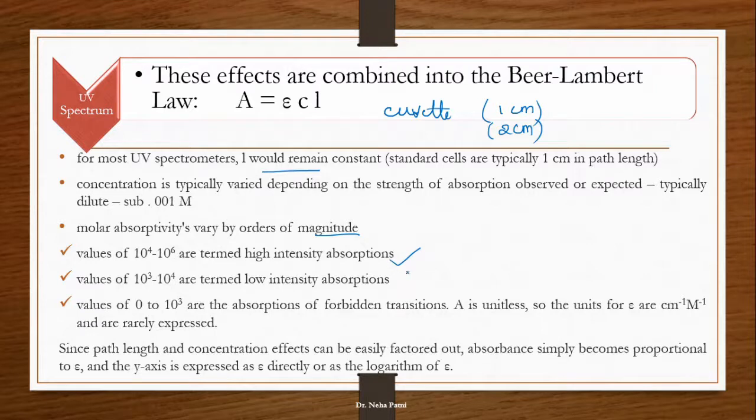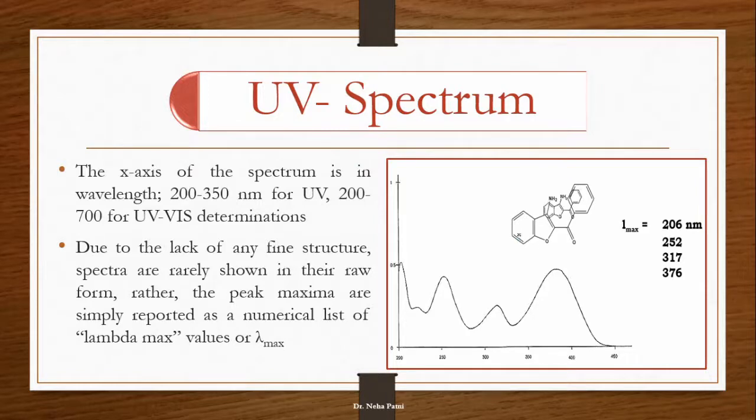Molar absorptivity value can give you some information. If the value is very high, you can say that the absorption is very intense. If it is of less intensity, then there are certain transitions which are not allowed - they are forbidden, but they are also sometimes expressed in the spectrum. Based on that you can figure out many things. Absorption is proportional to epsilon, which is your molar absorptivity coefficient. UV spectrum will look like this, and you have to identify the lambda max from the peak. Wherever you get a peak, you just have to extrapolate it. You can see you are getting a peak at 206, 252, 317, and 376.